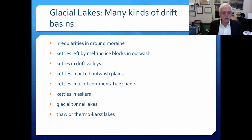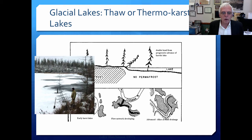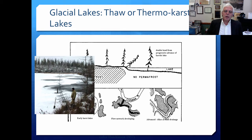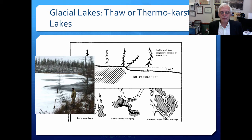Thermokarst lakes form in areas of permafrost. As the permafrost melts — which is happening quite rapidly now — there's a recession of the land surface, leaving a depression. Here you can see one of these thermokarst lakes on the left-hand side. Interestingly, the trees bend as they are absorbed by the lake, and you can actually date when these thermokarsts were formed by the angle of bending in the trees.